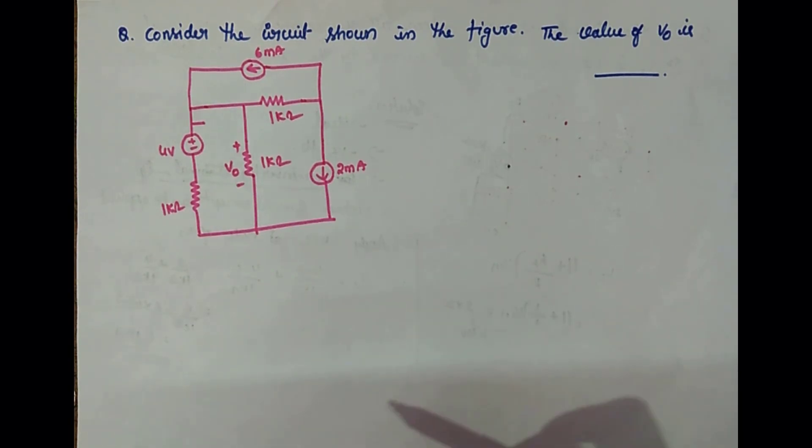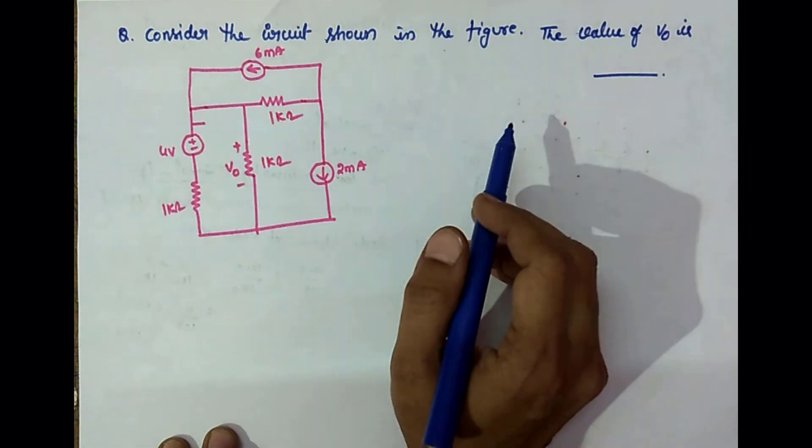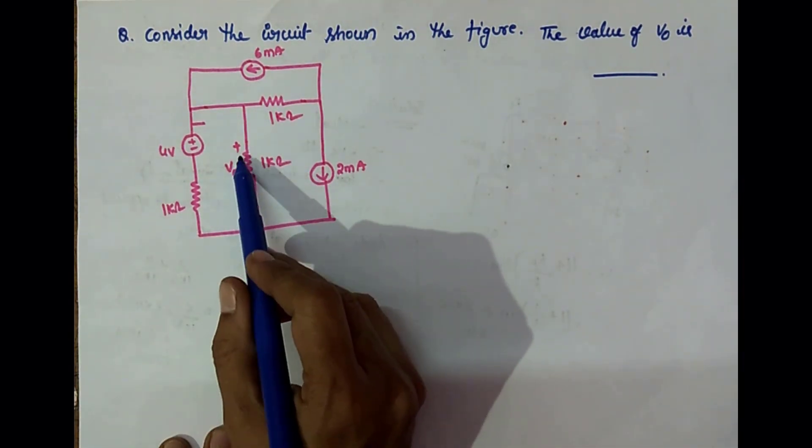Good day all of you. Today's great question is: consider the circuit shown in the figure, the value of V0 is. For this circuit you have to find V0.